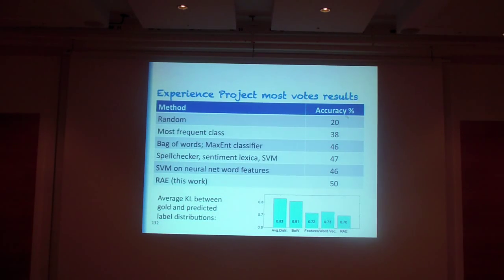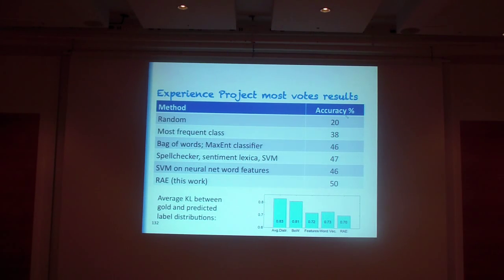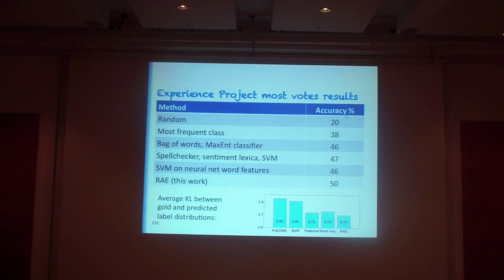We evaluate not just by predicting the most common category but also by how close the predicted distributions are to the ground truth, using KL divergence. In both cases, the recursive autoencoder gets state-of-the-art performance — it has the smallest average divergence to the ground truth distribution and also predicts the highest-clicked category most accurately.